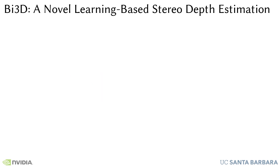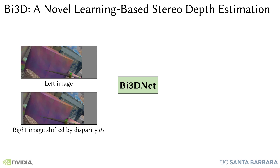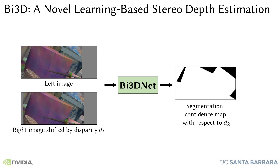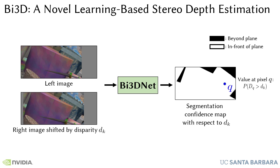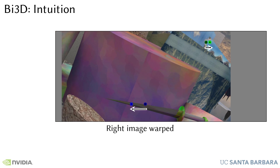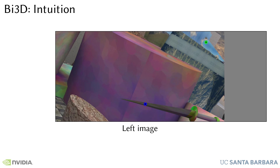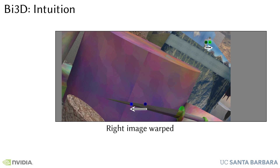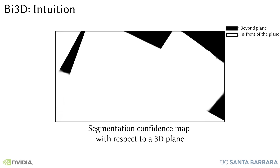To tackle these limitations, we introduce BI3D, a novel learning-based stereo depth estimation approach. The core of our method is a network that takes as input any one slice of the plane sweep volume and produces a binary segmentation confidence map. A plane sweep volume slice comprises the left image and the right image warped via a 3D plane corresponding to disparity d. The binary segmentation classifies the image into two regions: in front of and beyond the plane. At any pixel q in our confidence map, we produce the probability that the disparity at pixel q is greater than the disparity used to warp the right image.